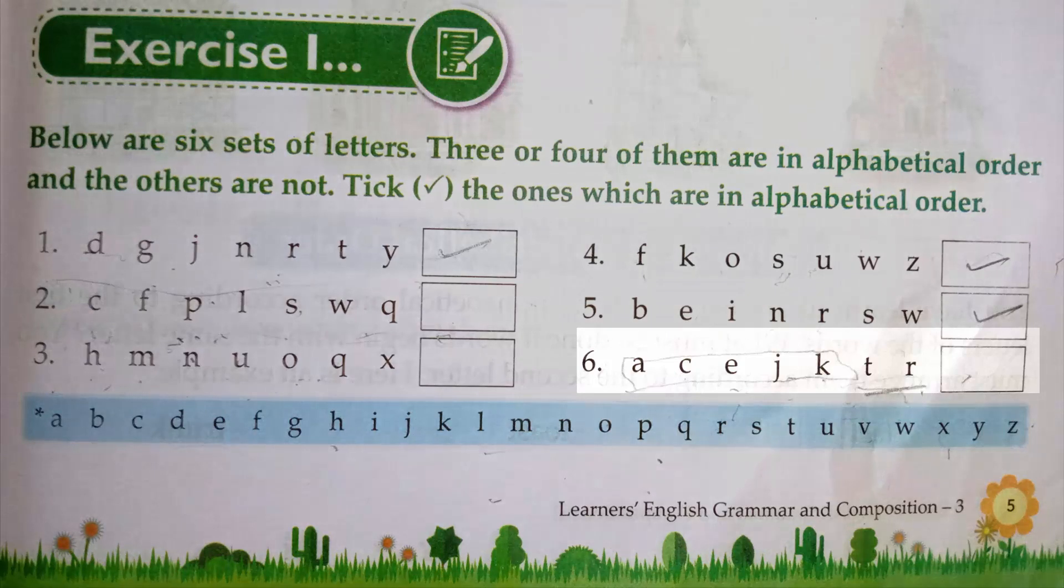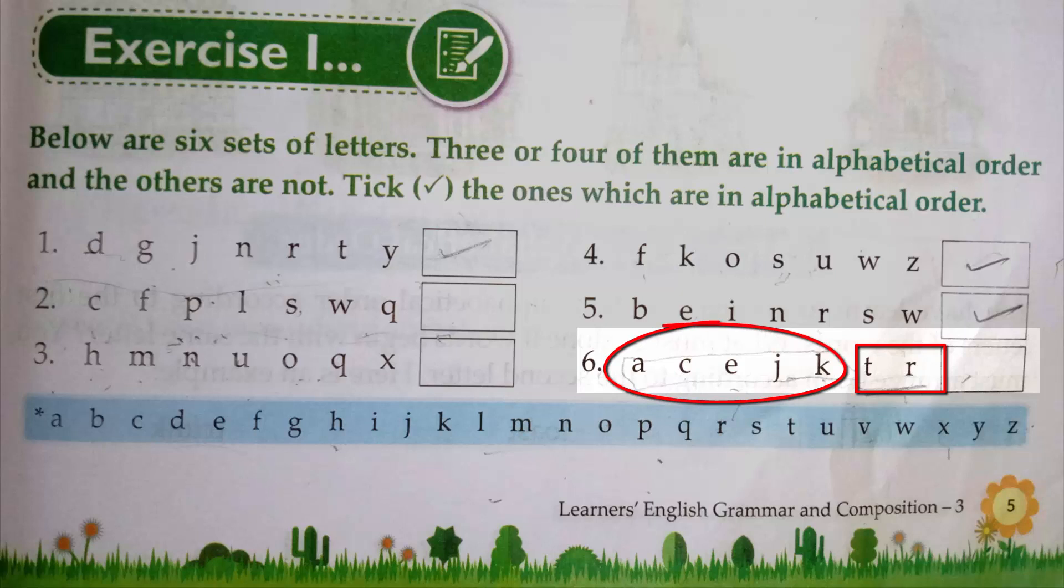Last one, A, C, E, J, K, T, R. Here, A, C, this is right. C comes after A, E comes after C, J comes after E, K, T, and R. Now see, it is correct till here, but T and R. R comes before T, but in this question it is given R after T. So this is not a correct series. So we will not put the tick mark in front of this series.